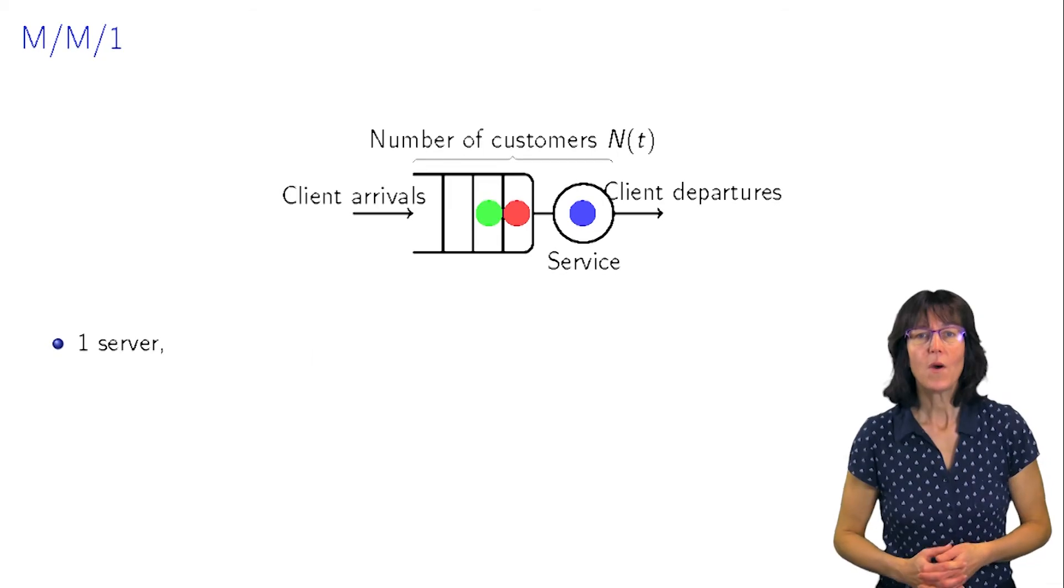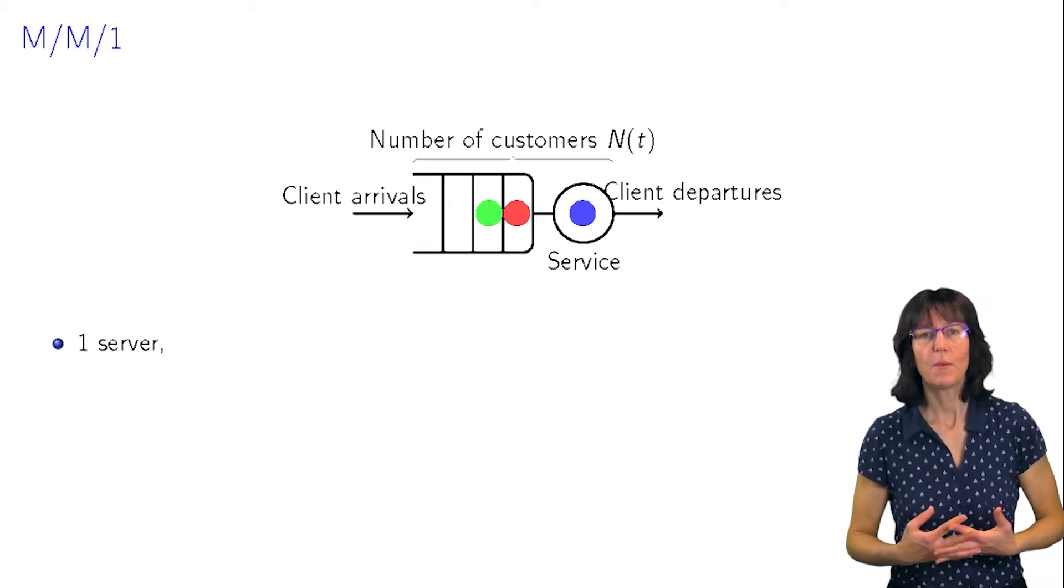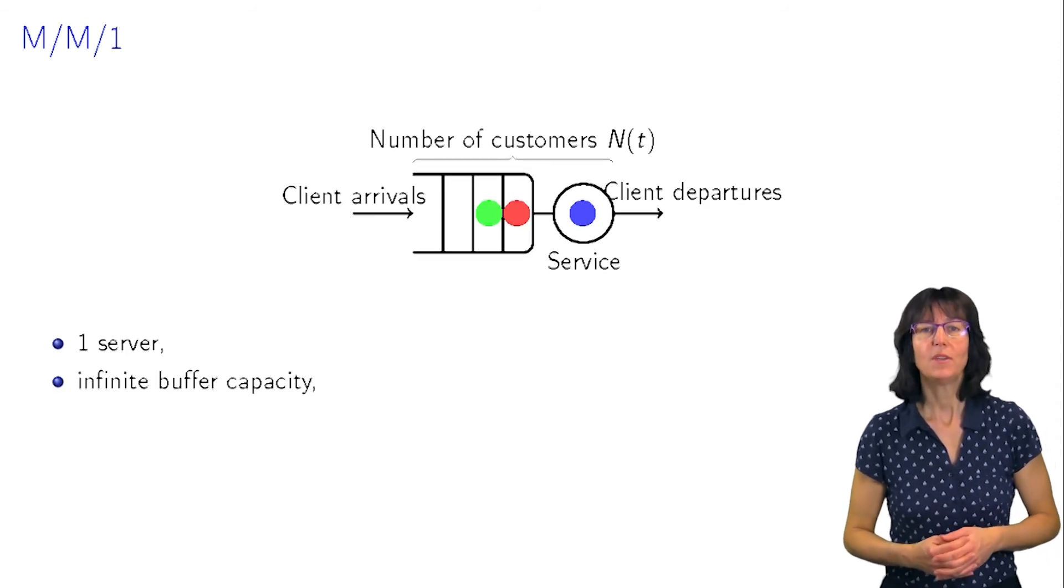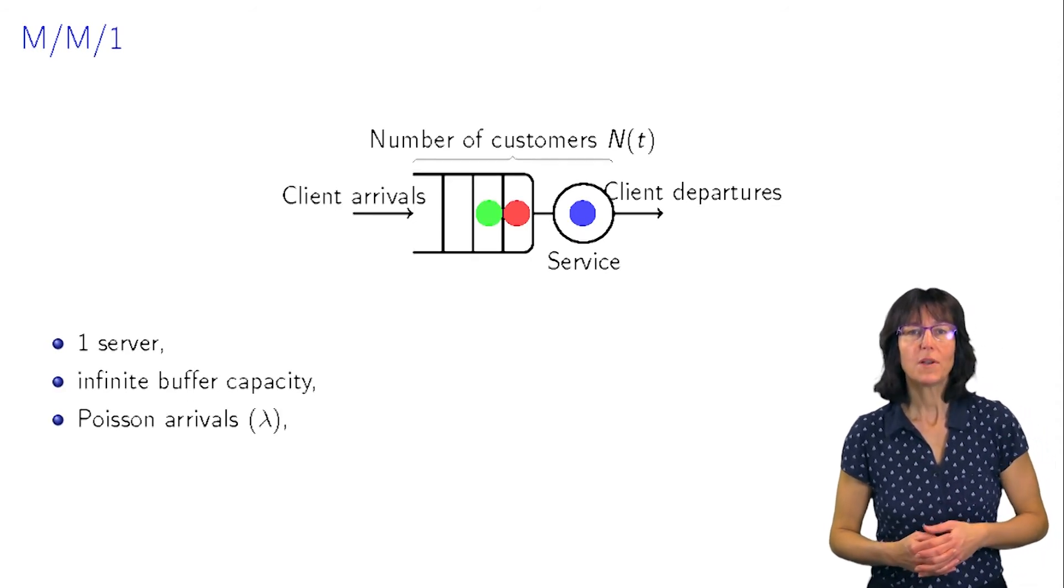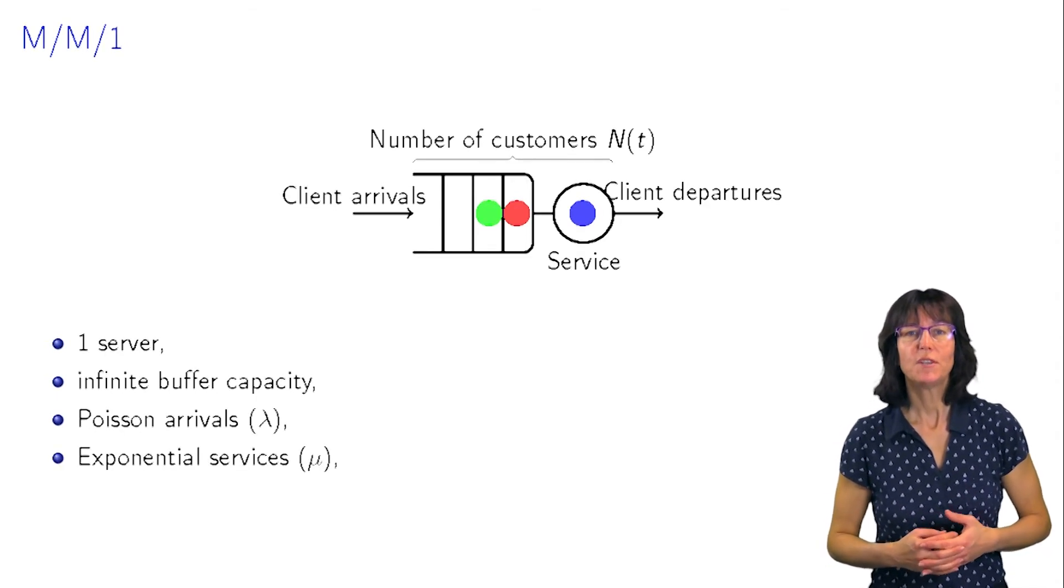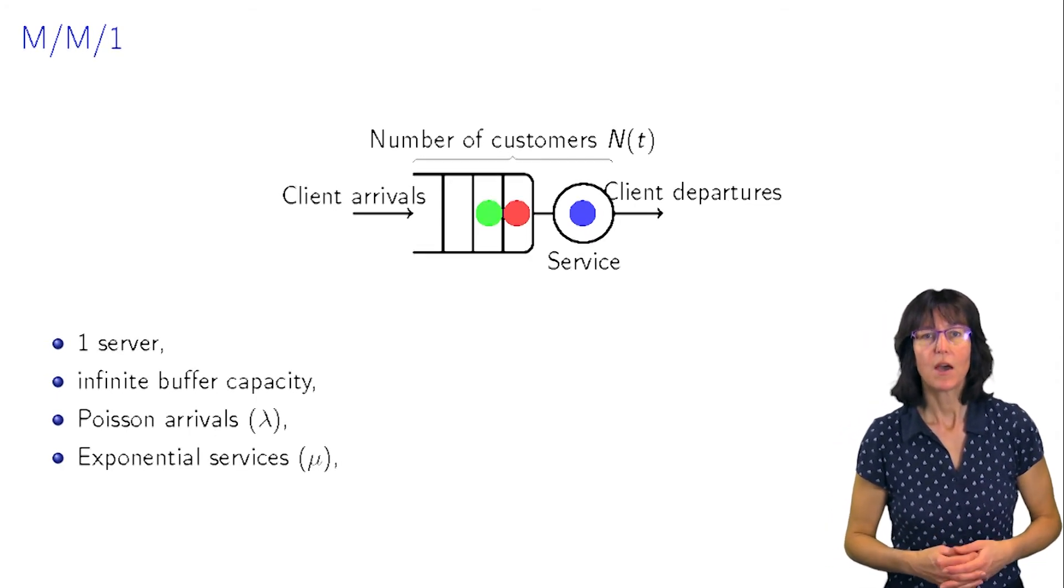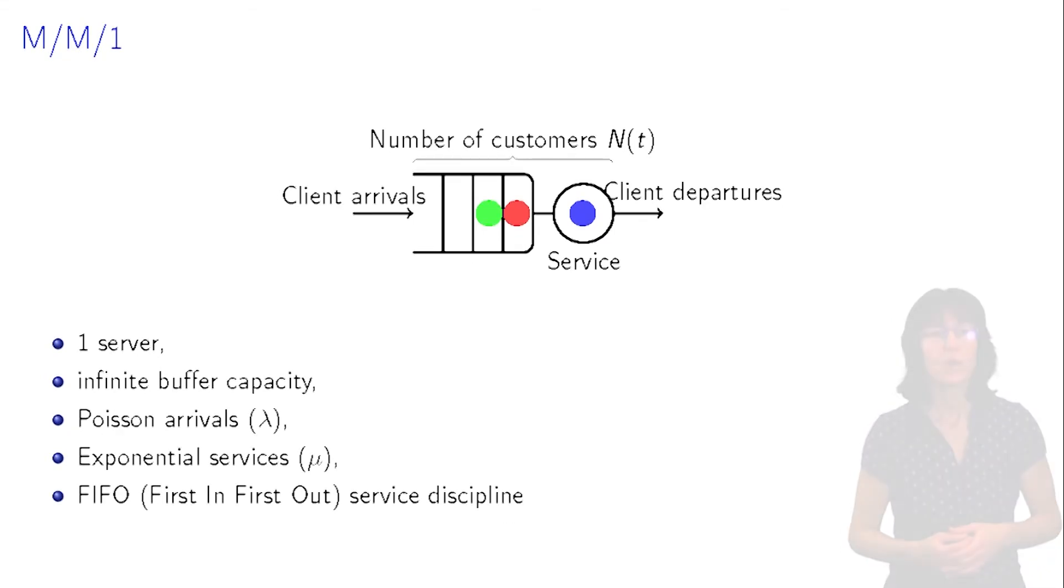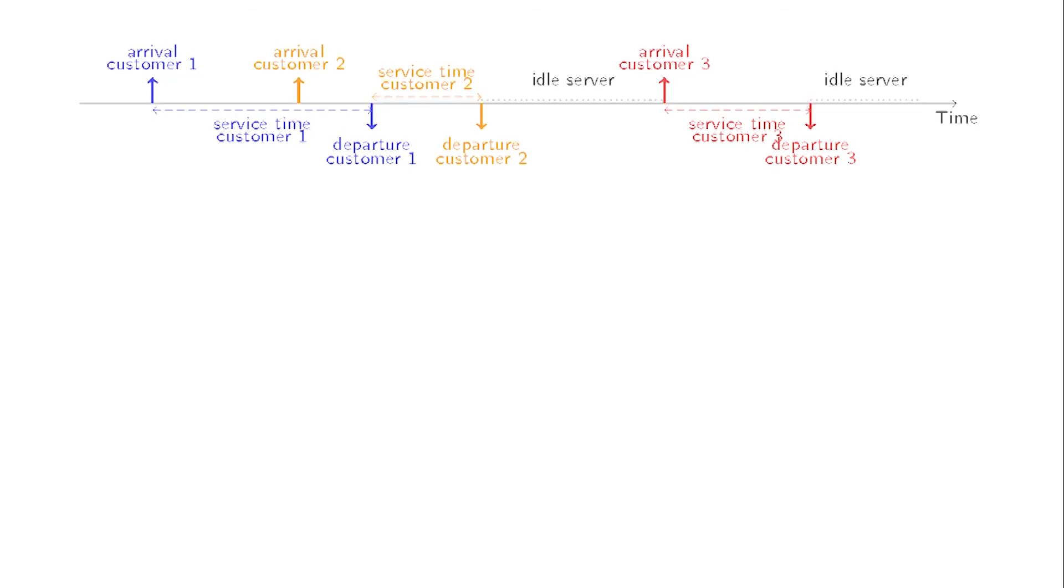Let's see now how it works for the M/M/1 queue. Recall that we have one server, an infinite buffer, Poisson arrivals of intensity lambda, exponentially distributed service times, and the discipline is first in first out. The process we are interested in is the number of customers in the system.